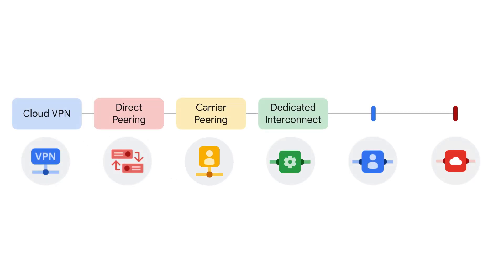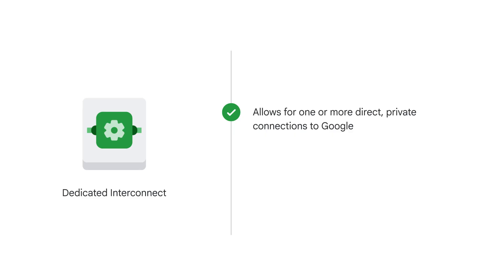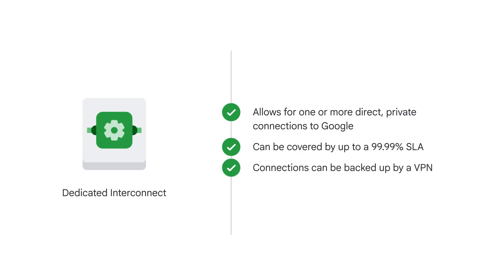If getting the highest uptimes for interconnection is important, using a dedicated interconnect would be a good solution. This option allows for one or more direct private connections to Google. If these connections have topologies that meet Google's specifications, they can be covered by an SLA of up to 99.99%. Also, these connections can be backed by a VPN for even greater reliability.